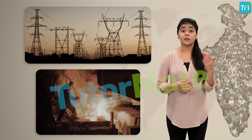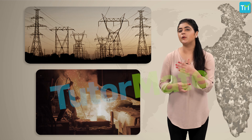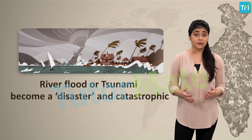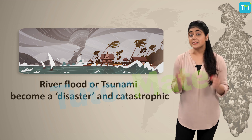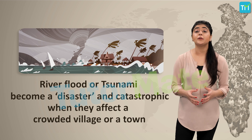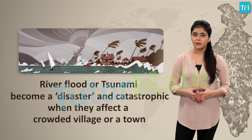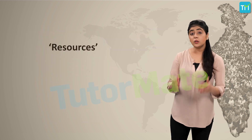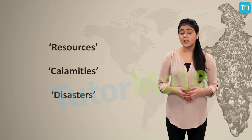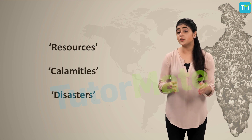Today we see the use of coal at various important places like the generation of electricity, production of steel, and as liquid fuel. Again, natural events like river floods or tsunamis become a disaster and catastrophic only when they affect a crowded village or a town. So we can say that resources, calamities, or disasters all make sense when they are related to human beings.